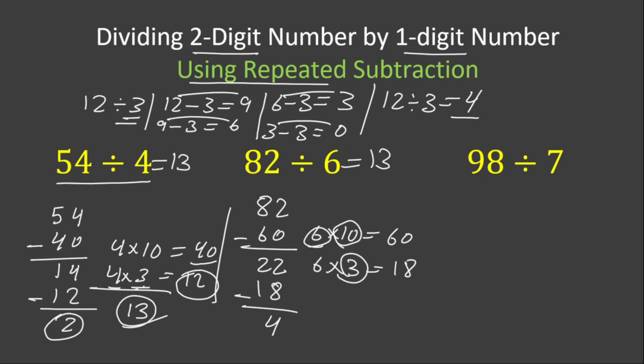In the third example we have 98 divided by 7. Again, we look for a number that should be multiplied by 7 and gives us a number that ends in 0. 10 times 7 is equal to 70. 8 minus 0 is 8 and 9 minus 7 is 2.